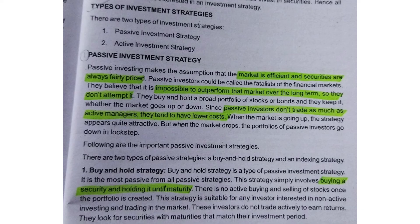There are two types: passive investment strategy and active investment strategy. Passive investment strategy is efficient and securities are always fairly priced. It could be called the fatless of the financial market. Investors believe that it is impossible to outperform the market over the long term.